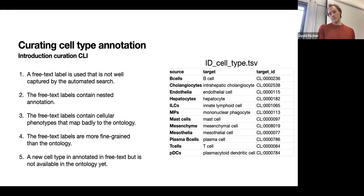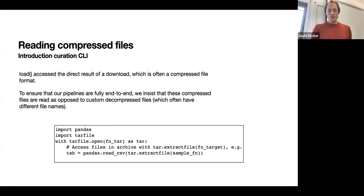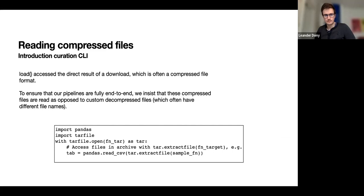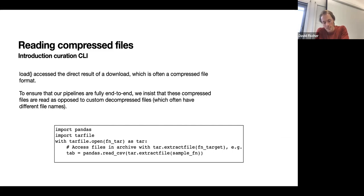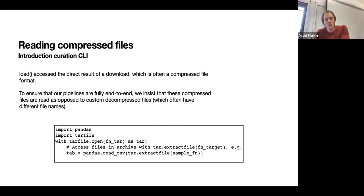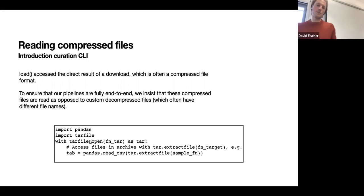Another aspect of the load function: you often need to read compressed files, since the load operates directly on downloaded objects to maximize reproducibility. Files are often tar-compressed or gz-compressed. We have code snippets in the documentation with examples of how to read from compressed objects in Python — for example, using a standard pandas function inside a 'with tarfile.open() as tar' block. Let us know if you have issues.